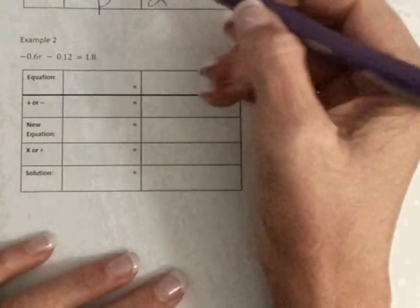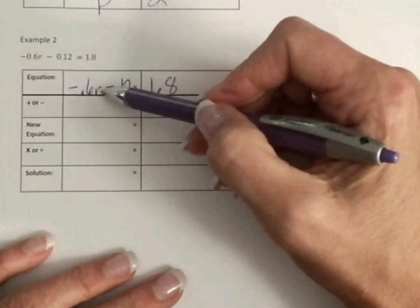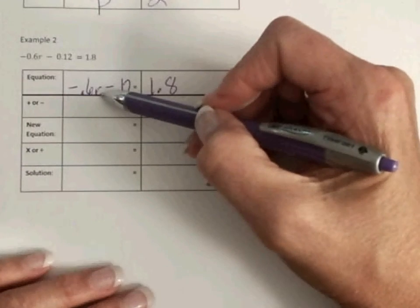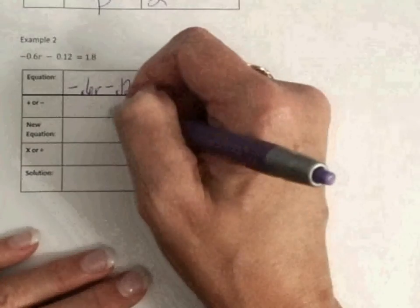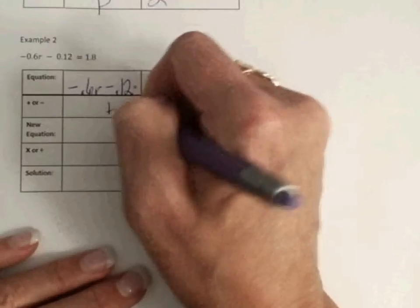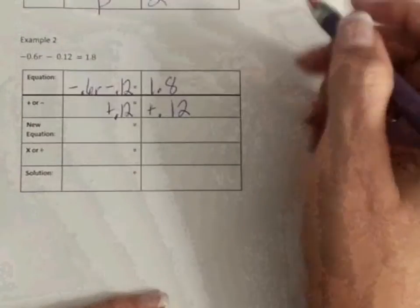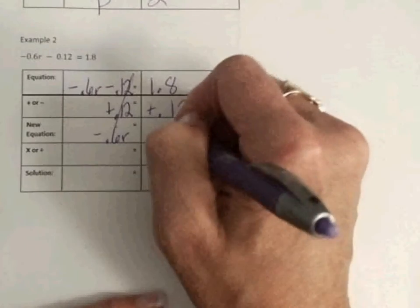So let's first write our equation up at the top. We have negative 0.6r minus 0.12 hundredths equals 1.8. Again, we want to isolate our variable. We want this negative 0.6r by itself, and so we need to get rid of this negative 1,200s. They subtracted, opposite operations, we are going to add 1,200s to both sides. Now, remember to line up your decimals when you're adding decimals. Our new equation, this zeroes each other out. These are zero pairs. So, we have negative 6 tenths r equals 1.92.